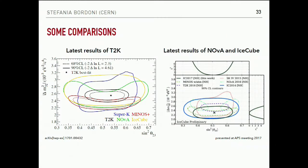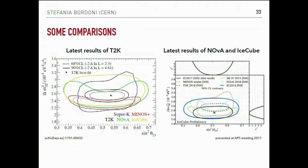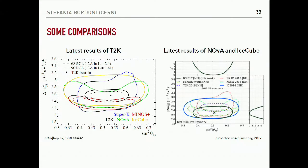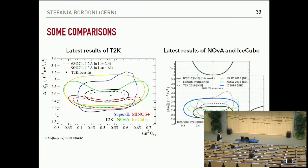Comparing all measurements of theta_23 and delta m squared_32 together, including MINOS, T2K, NOvA, Super-K, and IceCube, there is very good superposition — almost all experiments are in agreement. There is still a question about whether theta_23 is maximal, greater, or less than 45 degrees, which will only be resolved with more data.